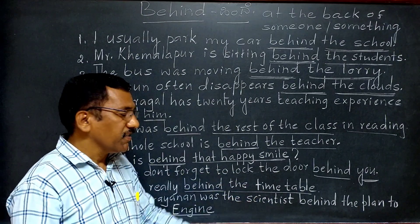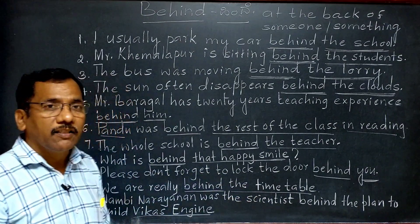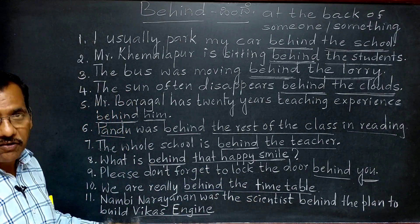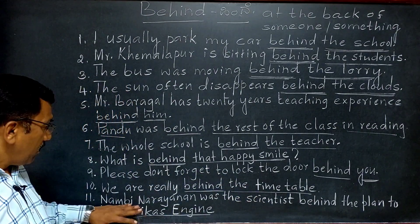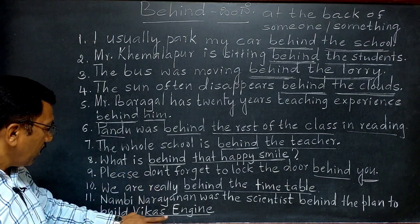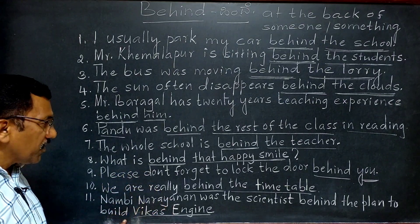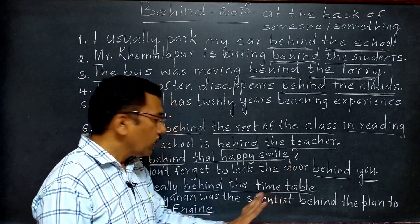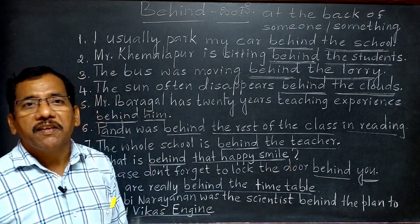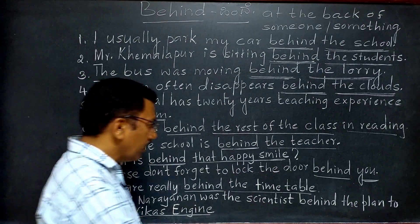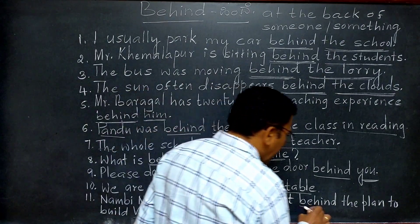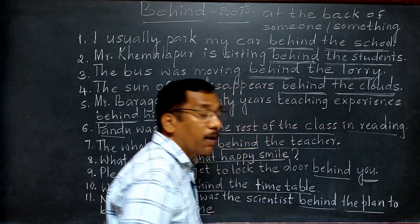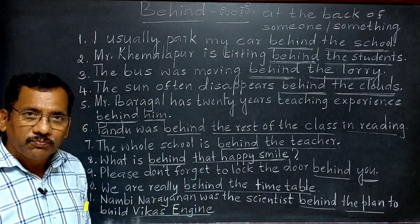Last example: Nambi Narayanan was the scientist behind the plan to build the Vikas engine. Here, 'behind' is used before the word 'plan' — 'plan' is a noun. It means Nambi Narayanan was the key person responsible for the plan to build the Vikas engine.